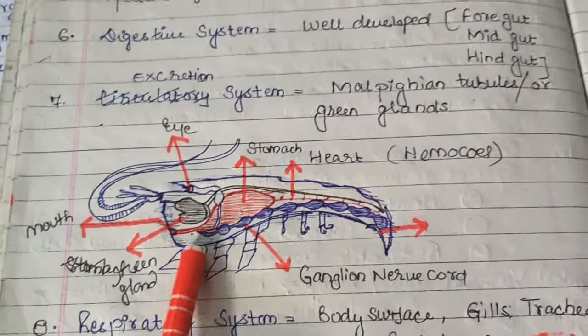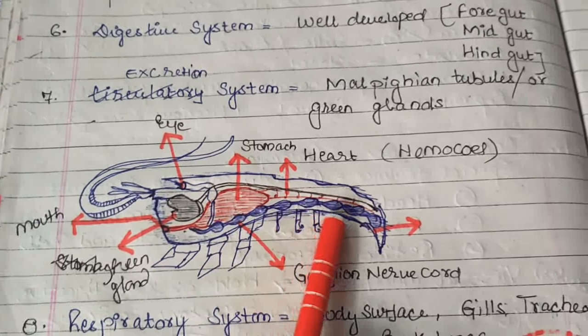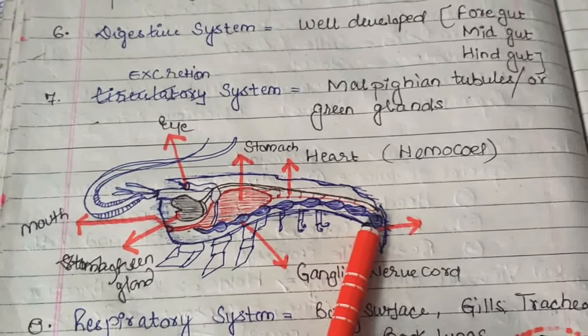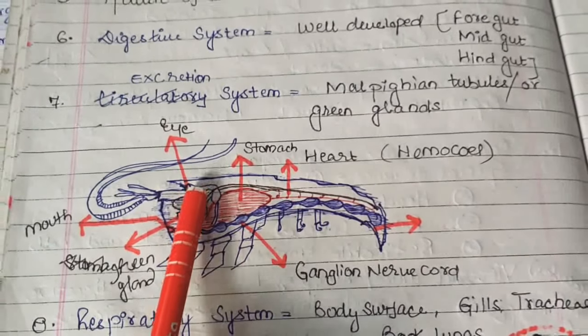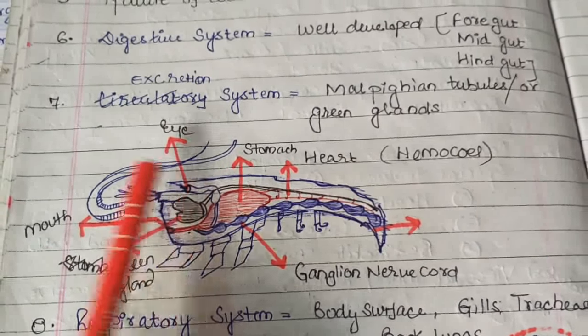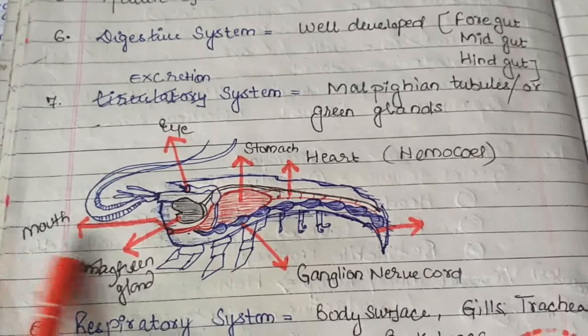You can see here a kind of pair of bunches of nerve cords, a heart, stomach, eye, and mouth part in this figure.